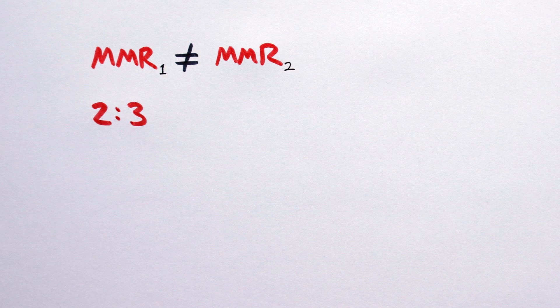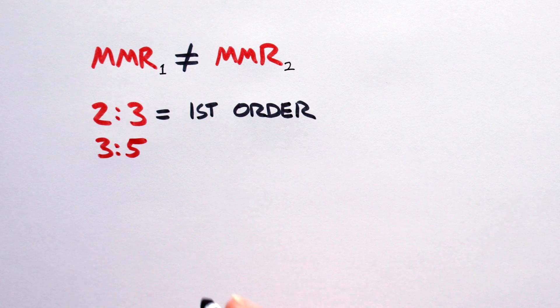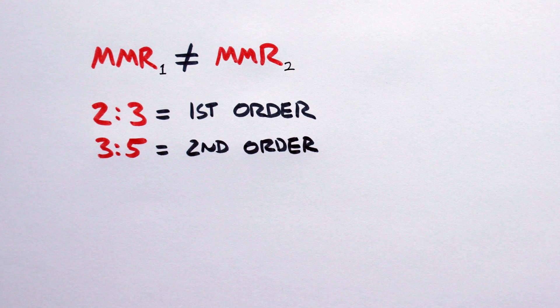That said, not all mean motion resonances are created equal. Broadly speaking, the greater the difference between the numbers in the ratio, the less stable the resonance is. Two to three is what's known as a first order resonance and is very stable, differing only by one. Three to five, differing by two, is a second order resonance and is less stable.